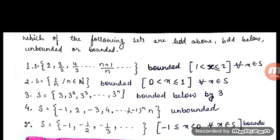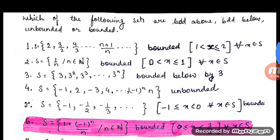So the first set is bounded between 1 and 2. The second example is 1/n where n belongs to the natural numbers. This set cannot exceed 1, so the maximum value is 1. The minimum approaches 0 at infinity since 1/∞ = 0. So this set is also bounded between 0 and 1, where 1 is included but 0 is not.